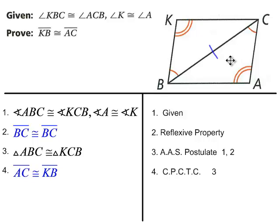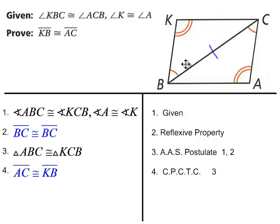Make sure you get the letters in the right order. Triangle ABC is congruent to triangle KCB, because we have to list the letters in the right order so that everything corresponds correctly.